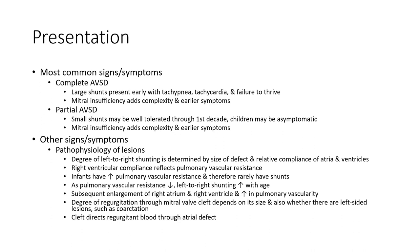Other signs and symptoms relate to pathophysiology. The degree of left-to-right shunt is determined by the size of the defects and relative compliance of the atrioventricular chambers. Pulmonary vascular resistance and the nature of the defects are also determining factors. These findings increase with age.